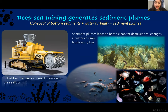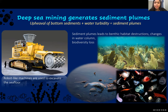Deep sea mining is the process of extracting mineral deposits like copper from the seafloor. In order to retrieve those materials, robotic-like machines are used. During the mining process, the motion of these machines excavating the seafloor creates sediment disturbances and turbidity in the water column. The upheaval of bottom sediments combined with the increased water turbidity generates what is termed a sediment plume.